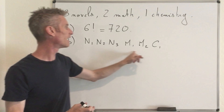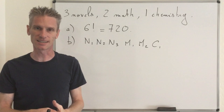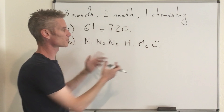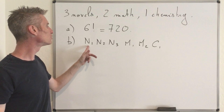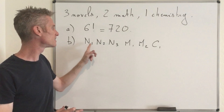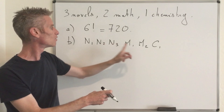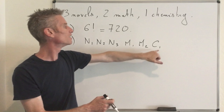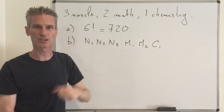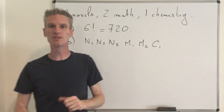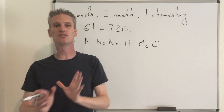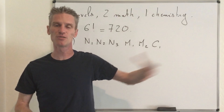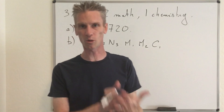If you choose the chemistry book at the first place, then you have all five remaining books possible for the second place. So you see that things become messy if you don't use the trick from the previous video about problem 1.7.